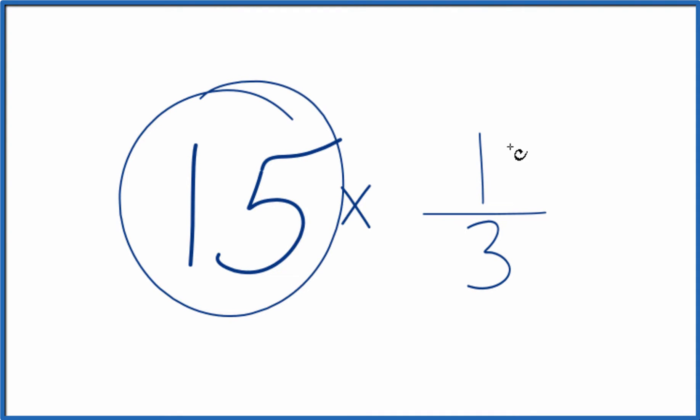Let's multiply 15 times one-third. You could just add one-third up 15 times. That would give you the correct answer for 15 times one-third.